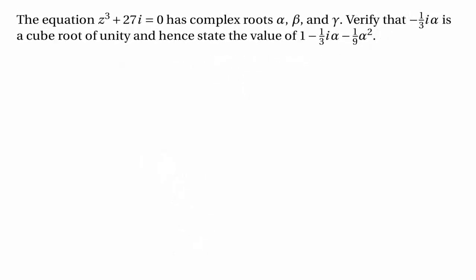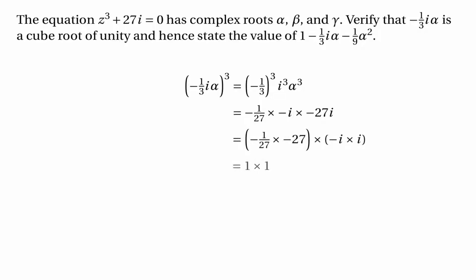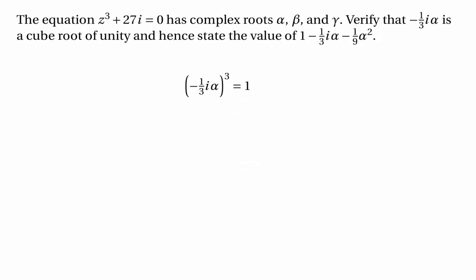Another part of the question asks us to verify that minus a third of i times alpha is a cube root of unity, and then to use this fact to work out the value of 1 minus (1/3)iα minus (1/9)α². To show that something is a cube root of unity, we have to show that its cube is equal to 1. If we cube the bits separately, we've got the cube of (−1/3) times the cube of i times α³, which is (−1/27) times (−i) times (−27i), and rearranging that gives 1 times 1, which is simply 1. So that proves that minus a third of i times alpha is a cube root of unity.